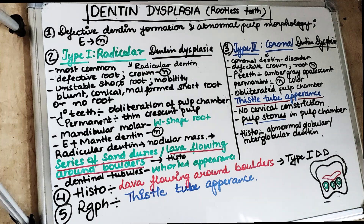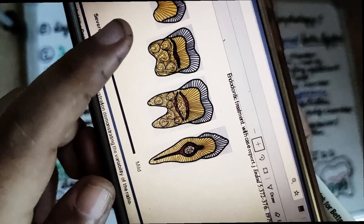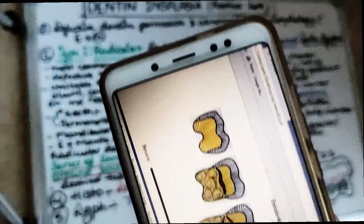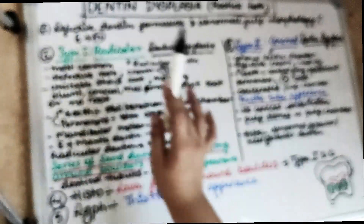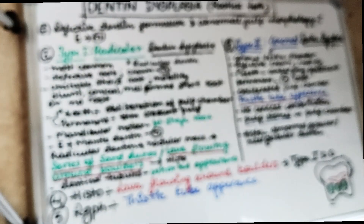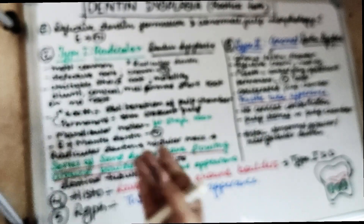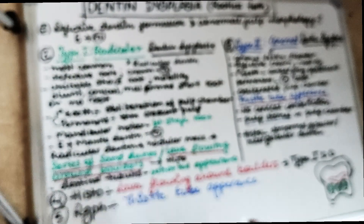In the radicular type — type 1 dentine dysplasia — the radicular dentine is defective and there is defective root formation. The crown, on the other hand, is absolutely normal. There is an unstable, short root, and because of this functionally unstable short root, the affected teeth show mobility and may be exfoliated prematurely due to trauma. The root of these teeth is malformed — short, blunt, conical — or the tooth can be completely devoid of any root.